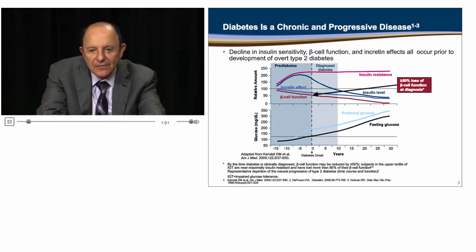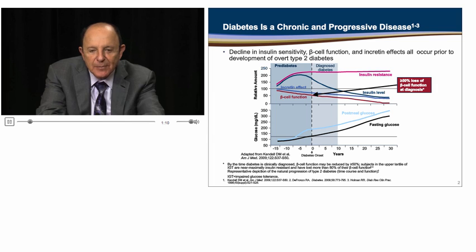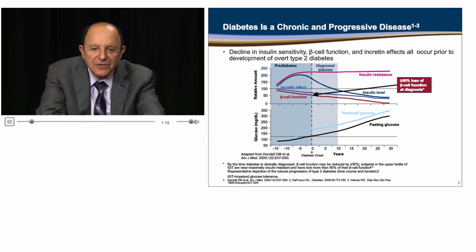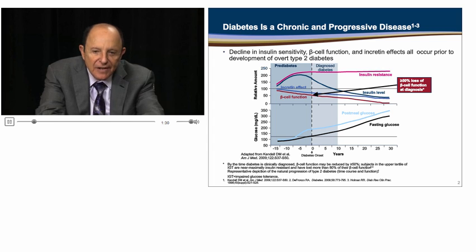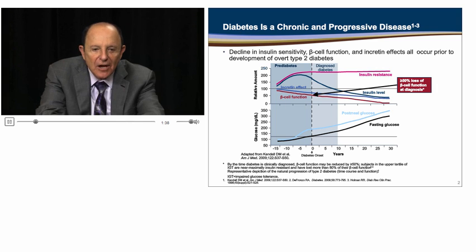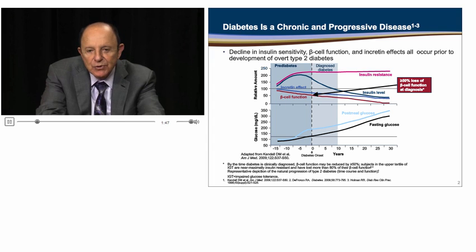The insulin resistance in liver results in excessive hepatic glucose production and is responsible for fasting hyperglycemia, while the insulin resistance in muscle is responsible for postprandial hyperglycemia. Before the onset of diabetes, there is a compensatory increase in insulin secretion that precisely offsets the severity of the insulin resistance, as shown by the navy blue line in the top graph, and glucose levels remain normal. As the beta cell dysfunction worsens, as shown by the maroon line in the top graph, insulin secretory capacity falls, impaired glucose tolerance (IGT) and hyperglycemia become apparent, and overt type 2 diabetes develops.